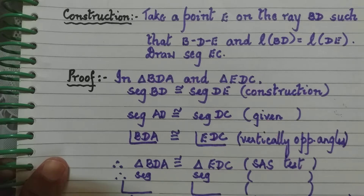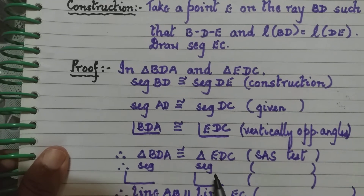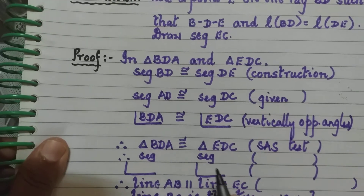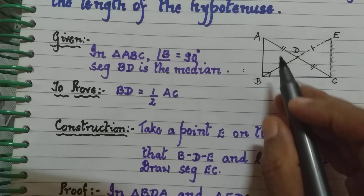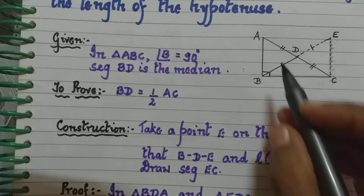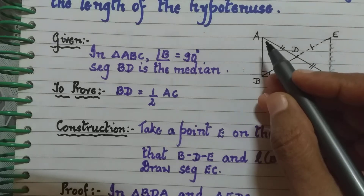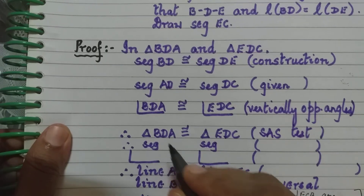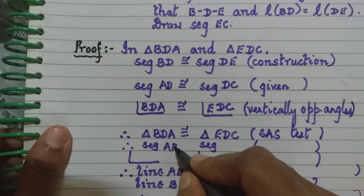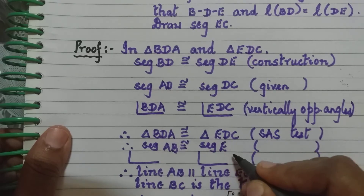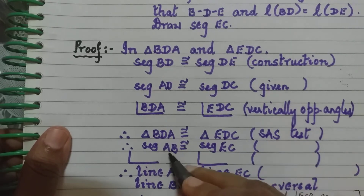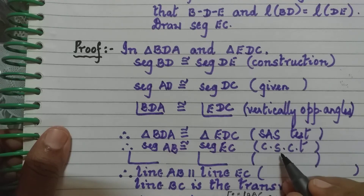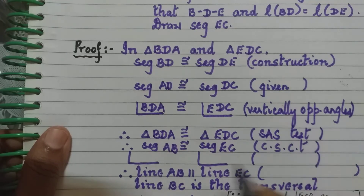From this congruence, a pair of segments and a pair of angles are congruent. We will take segment AB and segment EC from these two triangles. So segment AB is congruent to segment EC by CSCT — corresponding sides of congruent triangles.